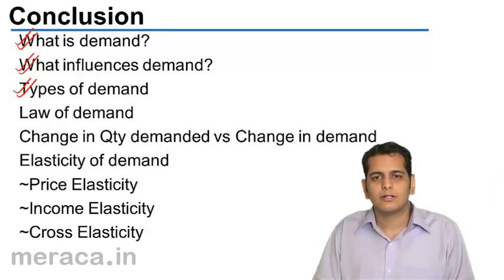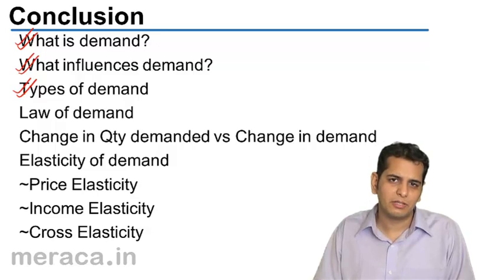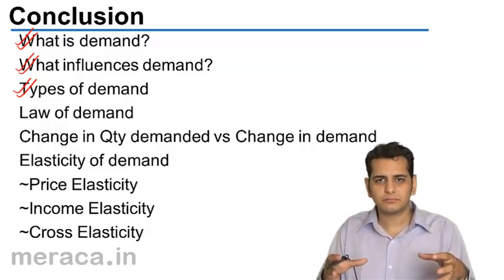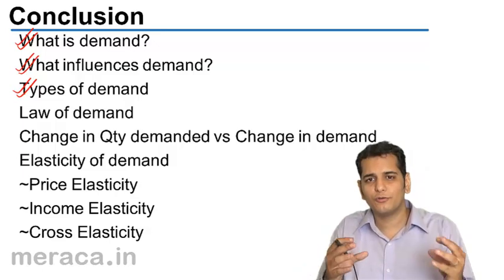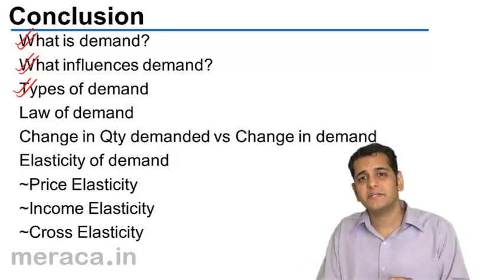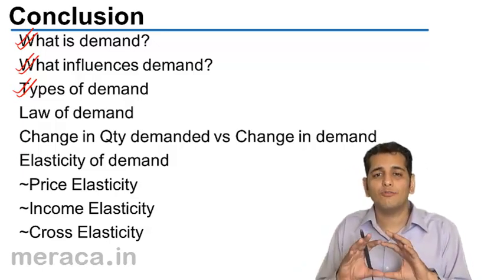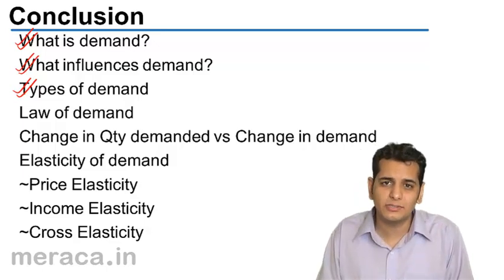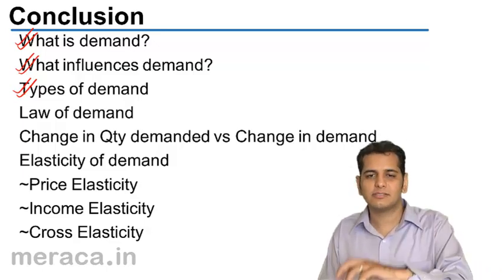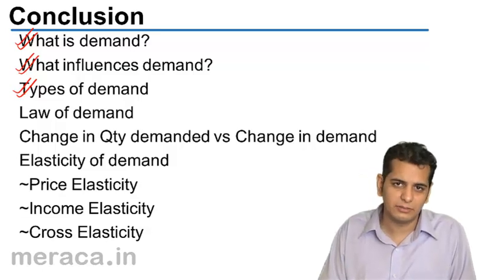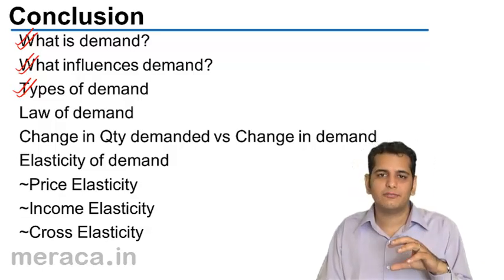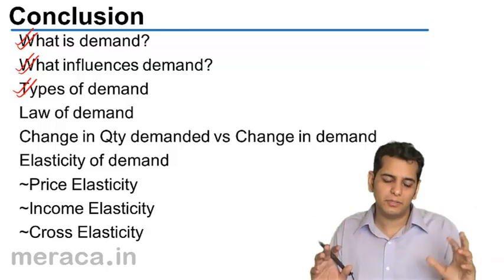Then we did company demand and industry demand. Company demand is demand from the point of view of a single company, whereas industry demand is the demand of all companies in an industry taken together. Company demand is a subset of industry demand — company demand is the smaller demand, whereas industry demand is the bigger demand.